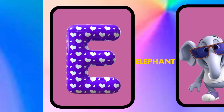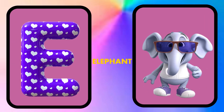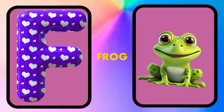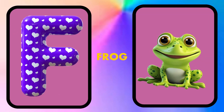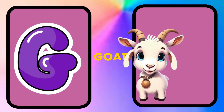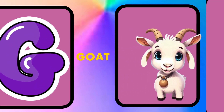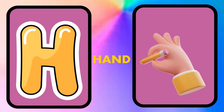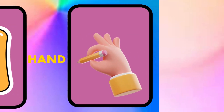E is for elephant, e-e-elephant. F is for frog, f-f-frog. G is for goat, g-g-goat. H is for hand, h-h-hand.